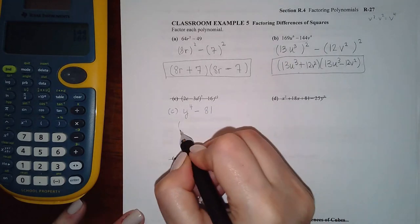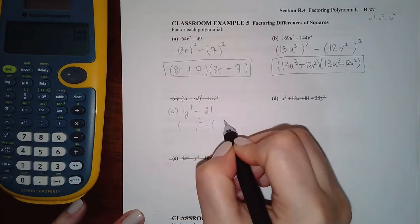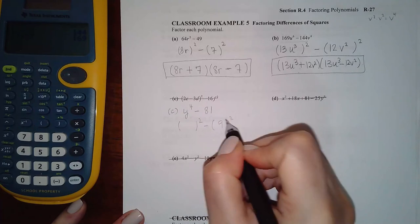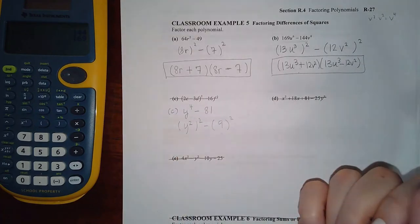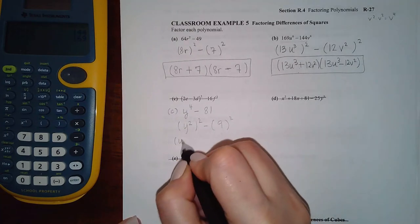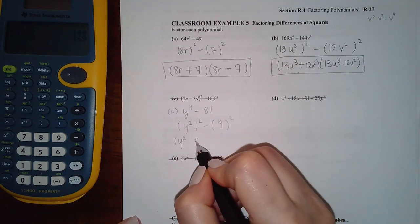Here, let's see what squared gives me these guys. I know 9 times 9 is 81, and we know y squared times y squared is y to the fourth. So that means I'm gonna have 9y squared in the front, 9 in the back.